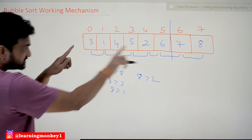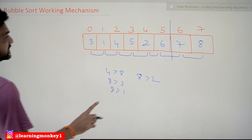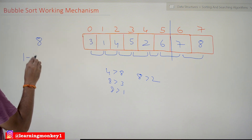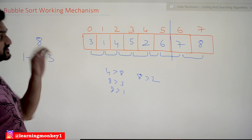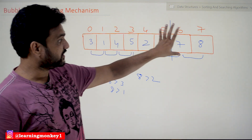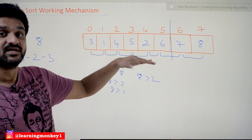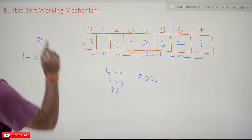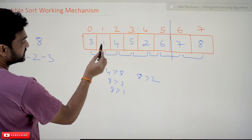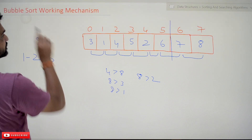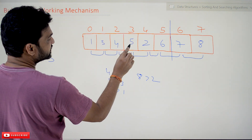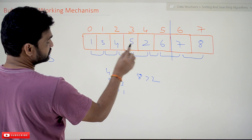We will continue iterating so that the remaining elements get arranged. We have to do 8 passes total; we have already done 1 and 2. Now we are in the third iteration. I'm explaining these iterations because there is an important disadvantage with bubble sort related to the number of iterations. In the third iteration: is 3 greater than 1? Yes — swapping is done; 1 and 3 are swapped. Then 3 greater than 4? No. 4 greater than 5? No.